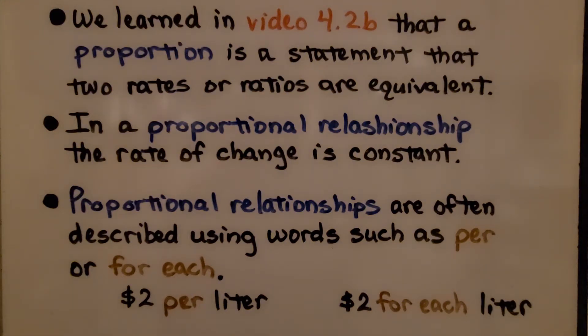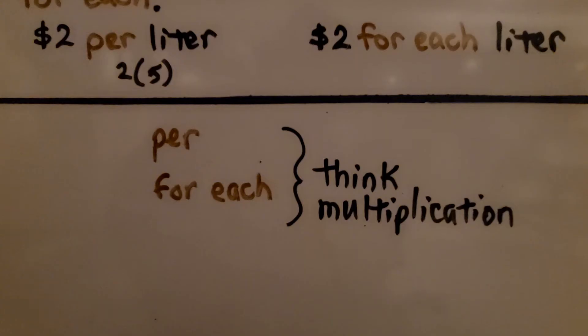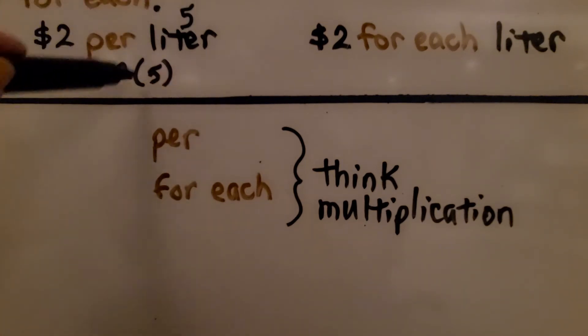We learned in Video 4.2b that a proportion is a statement that two rates or ratios are equivalent. In a proportional relationship, the rate of change is constant. Proportional relationships are often described using words such as per or for each. So we might see $2 per liter or $2 for each liter. If there were 5 liters, we know we would do 2 times 5. When you see the words per or for each, think multiplication. If it's $2 per liter and there are 5 liters, we're going to do 2 multiplied by 5.